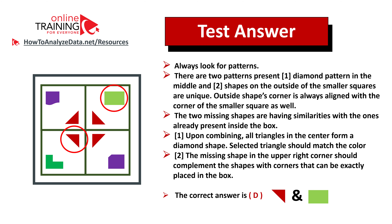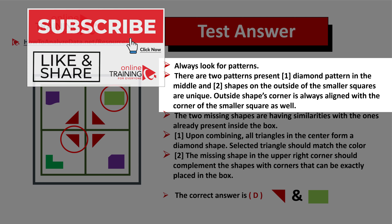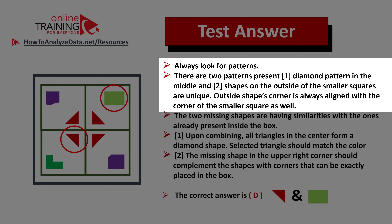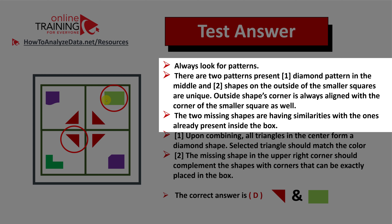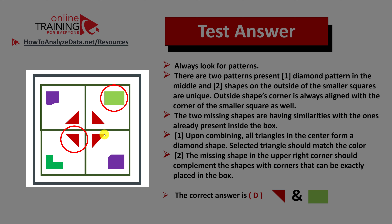To solve these types of problems you need to look for patterns, and there are two patterns here. Pattern one is the diamond pattern in the middle, and pattern two is the pattern of shapes on the outside of the smaller squares — unique outside shapes whose corners are always aligned with the corner of the smaller square. Upon combining all triangles in the center, they form a diamond shape.